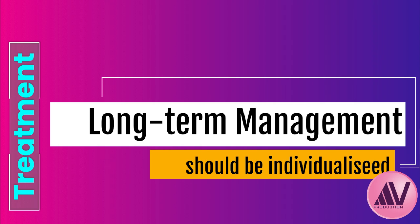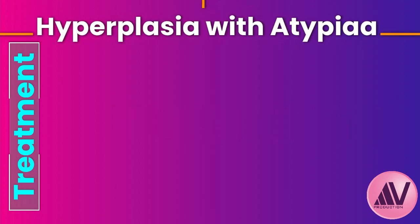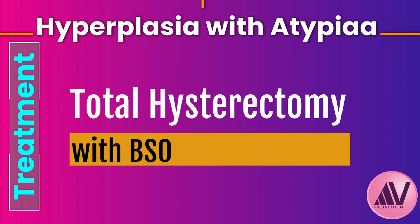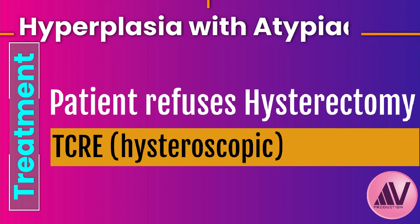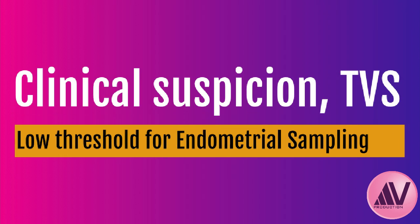If the hyperplasia has regressed, the IUD can stay in for continued effect. For hyperplasia with atypia, treatment is drastically different. Because of the significant risk of underlying cancer or progression, the standard recommendation is a total hysterectomy — usually including the fallopian tubes and ovaries, though removing the ovaries in premenopausal women requires careful discussion. If surgery is refused, an alternative is hysteroscopic resection of the entire endometrial lining followed by progestogen therapy, but hysterectomy is the preferred route.